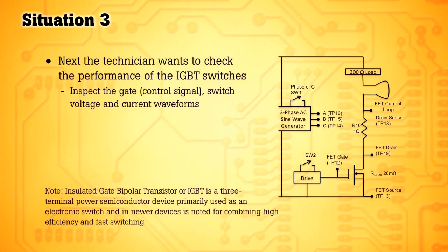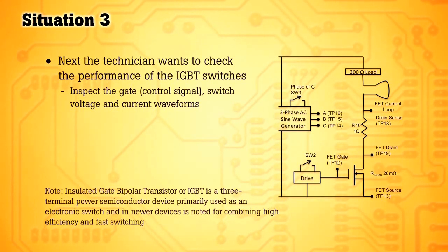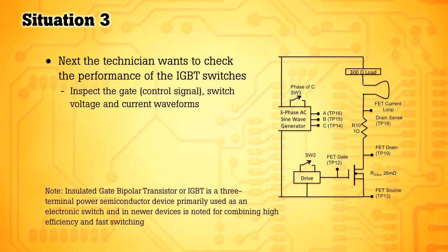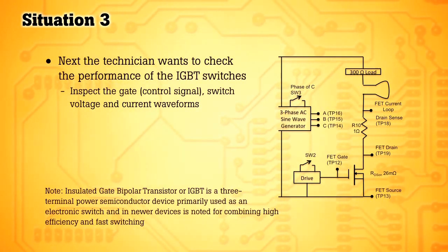In this situation, we want to check the performance of the high-speed electronic switches. These are the critical switches that control the output voltage in any inverted circuit. It's important that you inspect the performance of these switches to make sure there are no transients or anomalies generated on the output side of the switch.